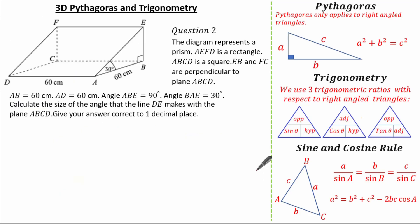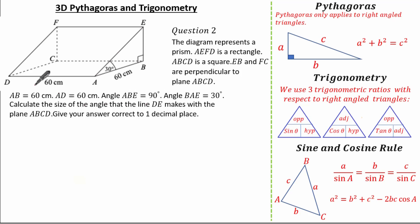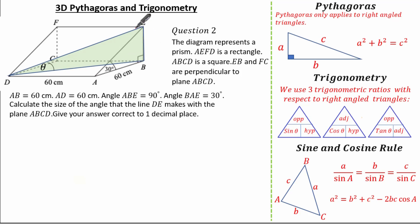Let's have a look at a slightly harder question. We're given a prism where AEFD is a rectangle, ABCD is a square, EB and FC are perpendicular to the plane ABCD. We're given AB is 60 cm, AD is 60 cm, angle ABE is 90 degrees, and angle BAE is 30 degrees. We're asked to calculate the angle that line DE makes with the plane ABCD, correct to one decimal place.